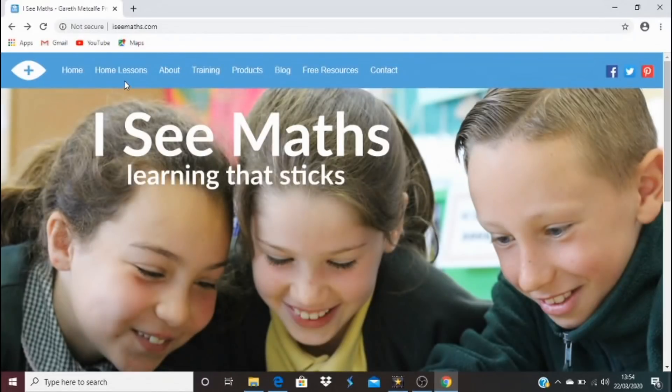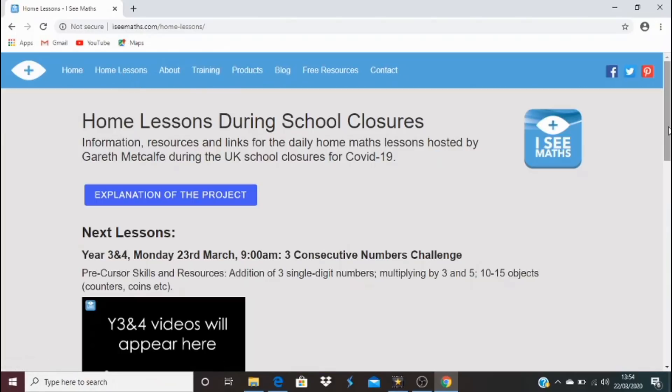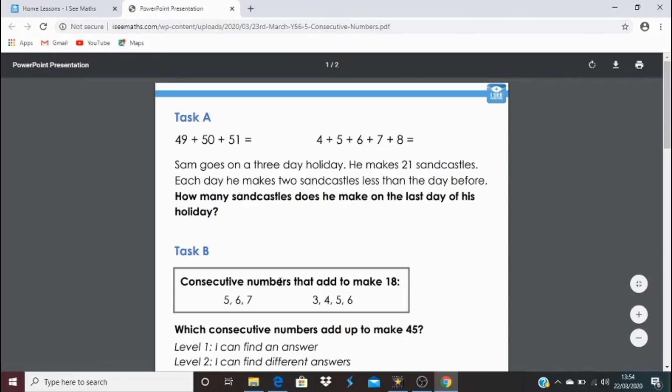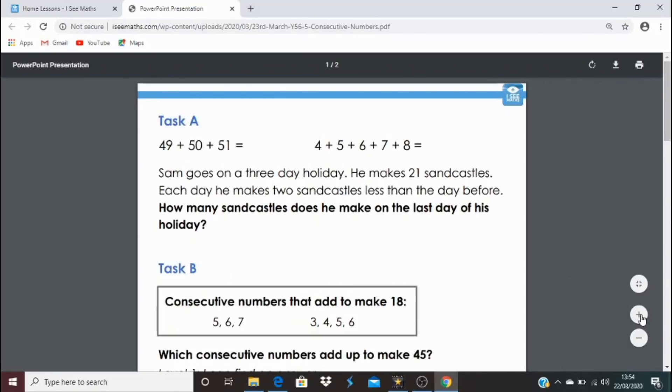So, let's have a look at your challenges. icmass.com, home lessons, and we're going to go down. Year five and six, for the tasks, tasks, year five and six, five consecutive numbers. Click this link, and that brings us our options here. Now, you might have a go at both tasks. You might have a go at just one of them. Choose the challenge that's just right for you.